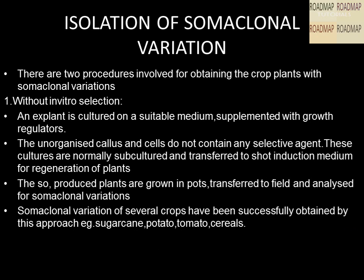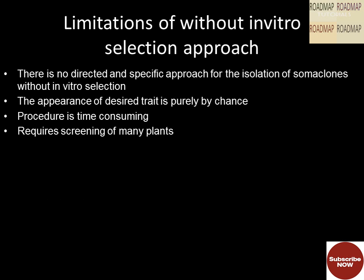Regarding isolation of somaclonal variations, there are two procedures for obtaining crop plants with somaclonal variations: without in vitro selection and with in vitro selection. In the without in vitro selection approach, an explant is cultured on a suitable medium supplemented with growth regulators. The unorganized callus and cells do not contain any selective agent. These cultures are subcultured and transferred to shoot induction medium for plant regeneration. The produced plants are grown in pots, transferred to field, and analyzed for somaclonal variations. This approach has been successfully used for sugarcane, potato, tomato, and cereals.